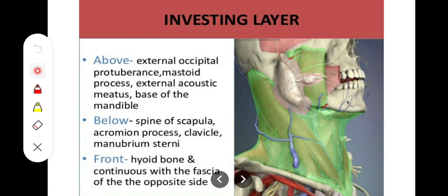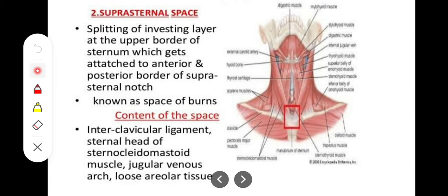At the 7th cervical vertebra, which is an atypical cervical vertebra, there is no ligamentum nuchae attached. So the posterior attachment of the investing layer of the deep cervical fascia is to the ligamentum nuchae and the spinous process of the 7th cervical vertebra. The anterior attachment is at the symphysis menti and the hyoid bone. These are the complete superior, inferior, anterior, and posterior attachments.